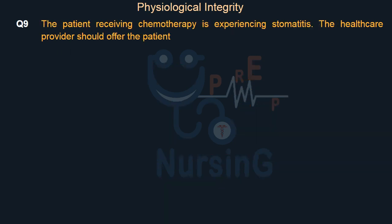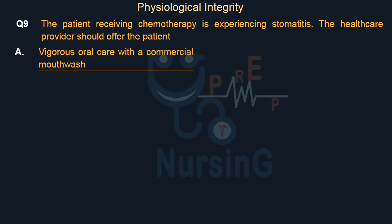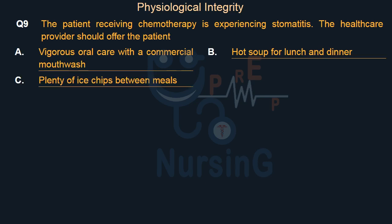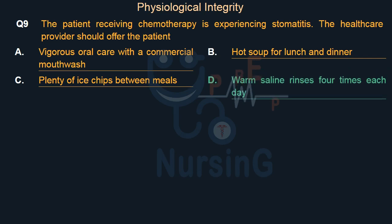The patient receiving chemotherapy is experiencing stomatitis. The healthcare provider should offer the patient: Option A: Vigorous oral care with a commercial mouthwash. Option B: Hot soup for lunch and dinner. Option C: Plenty of ice chips between meals. Option D: Warm saline rinses four times each day. The right answer is Option D: Warm saline rinses four times each day.